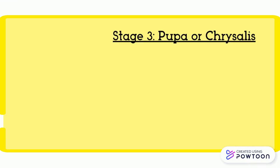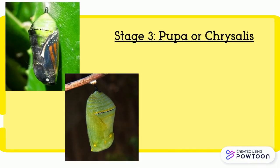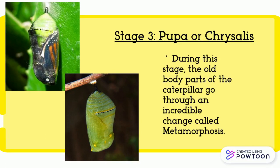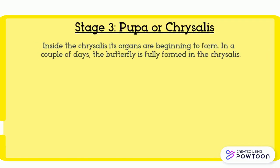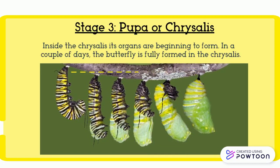After the caterpillar stage, we now have stage three: the pupa or chrysalis stage. During this stage, the old body parts of the caterpillar go through an incredible change called metamorphosis. The butterfly's organs begin to form in the chrysalis. Going from the left to the right, you can see the formation of the caterpillar turning into that beautiful green chrysalis.